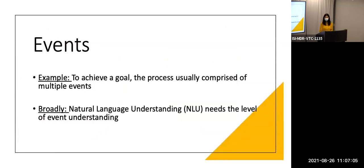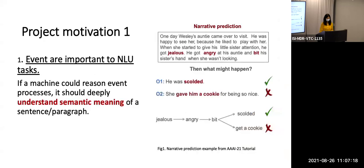From the examples we can see that to achieve a goal, the process usually comprises multiple events. More broadly, natural language understanding needs this level of understanding. To be more specific, if we look at an instance of narrative prediction — one day Wesley's auntie comes over to visit — we can see there's interaction between different characters, and we have to reason about what the character will eventually do. If the model is aware of the sequence of events and can reason what's more likely to happen after one event, then this kind of task becomes easier. For example, if Denise is not behaving well, he is unlikely to be rewarded but will be scolded.